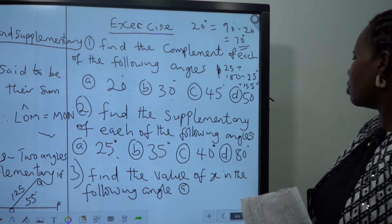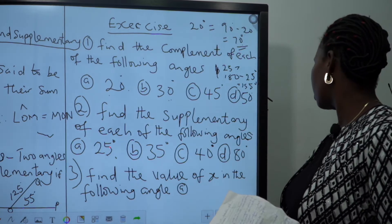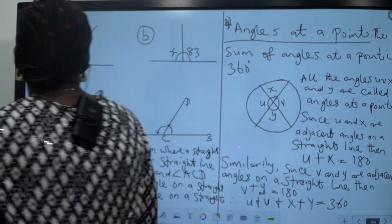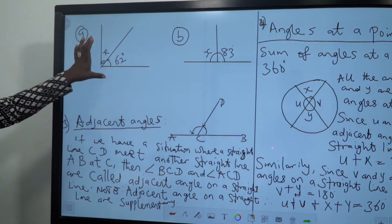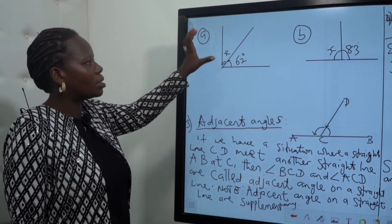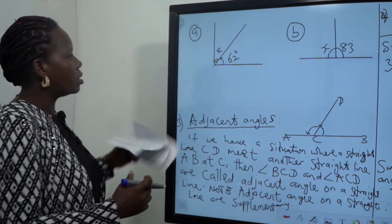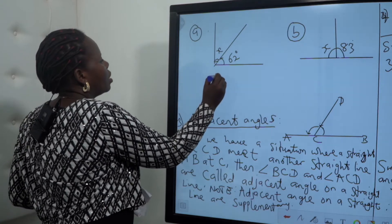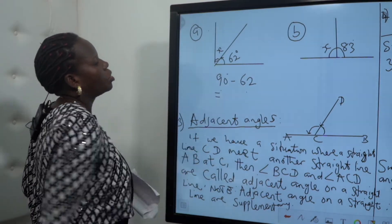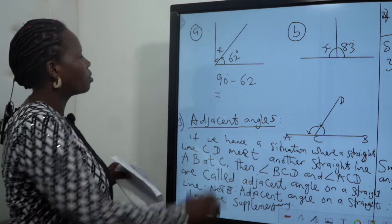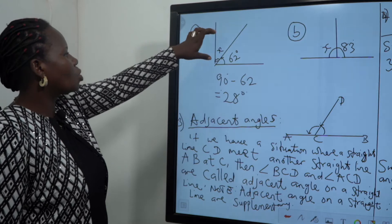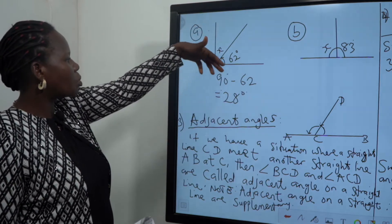Now find the value of x in the following angles. The diagram shows a right angle of 90 degrees, and one part is given as 62 degrees. So what you do is: 90 degrees minus 62 equals 28 degrees. The answer is 28 degrees, and our x equals 28 degrees. If we sum the two: 28 plus 62 gives us 90 degrees — confirming it is a complementary pair.